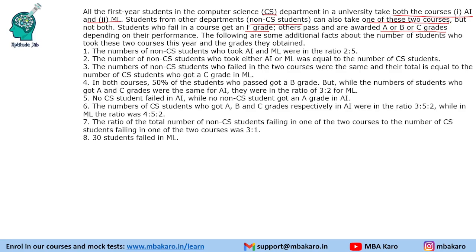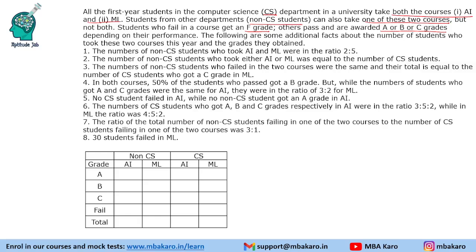We will make a table of CS and non-CS students who take AI and ML and find the different grades. In CS students, they have to take both courses, so the total number of people taking AI will be equal to the total number taking ML. In non-CS students these numbers are not necessarily equal. The first fact says the number of non-CS students who took AI and ML were in the ratio 2:5.